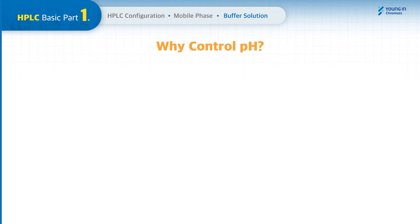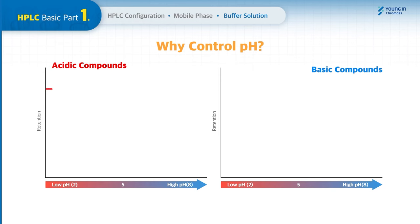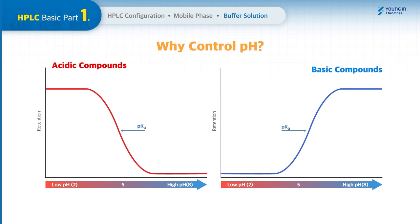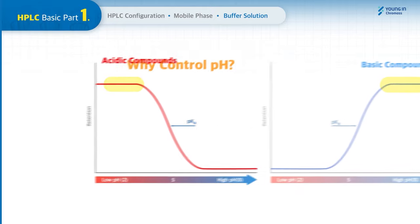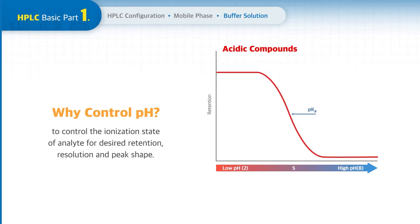When preparing the mobile phase, we need to consider the pH of both the mobile phase and the sample. When the sample contains ionizable compounds, the pH of the mobile phase determines the degree of ionization of the analyte, which affects retention as well as selectivity. If the mobile phase pH is near the pKa range of the sample, small changes in pH can lead to dramatic changes in retention. At low pH, acids are more retained, whereas bases are more retained at high pH. This is why the pH of the mobile phase must be correctly adjusted to control the ionization state of the analyte for desired retention, resolution, and peak shape.